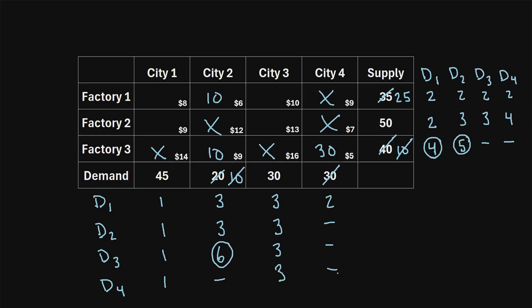The largest difference among the D4 values is four. We identify the lowest shipping cost in that row, which is nine. We ask whether we can fulfill as much demand as possible in city one using factory two's supply of 50. Since 50 is greater than the demand of 45, we use 45 units, completely meeting city one's demand. Factory two's supply is reduced to five. City one's column is crossed out.